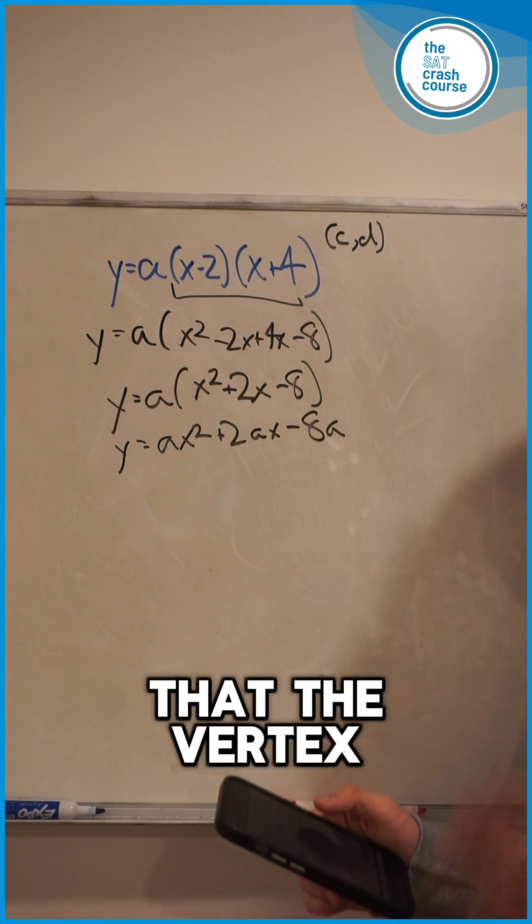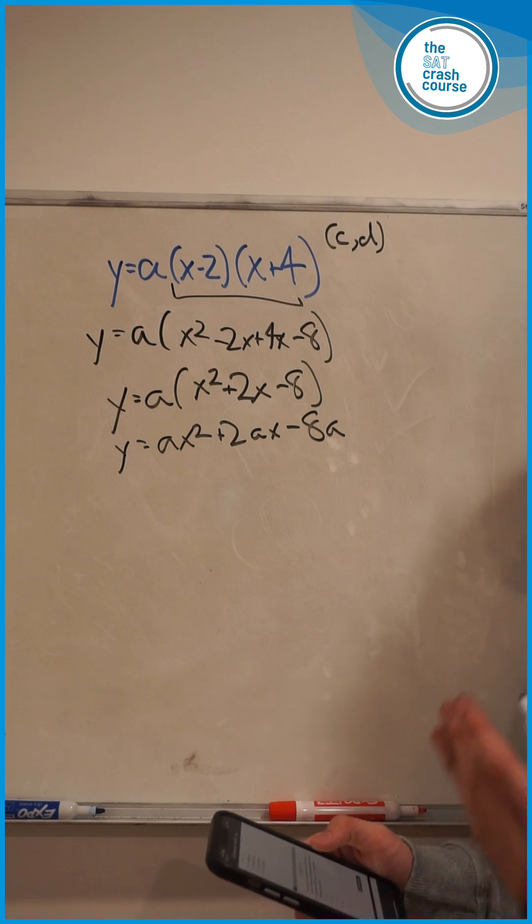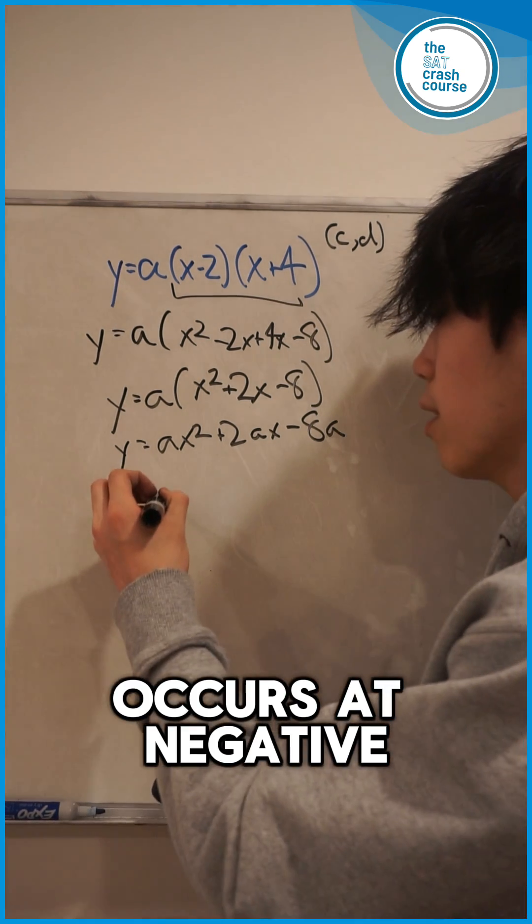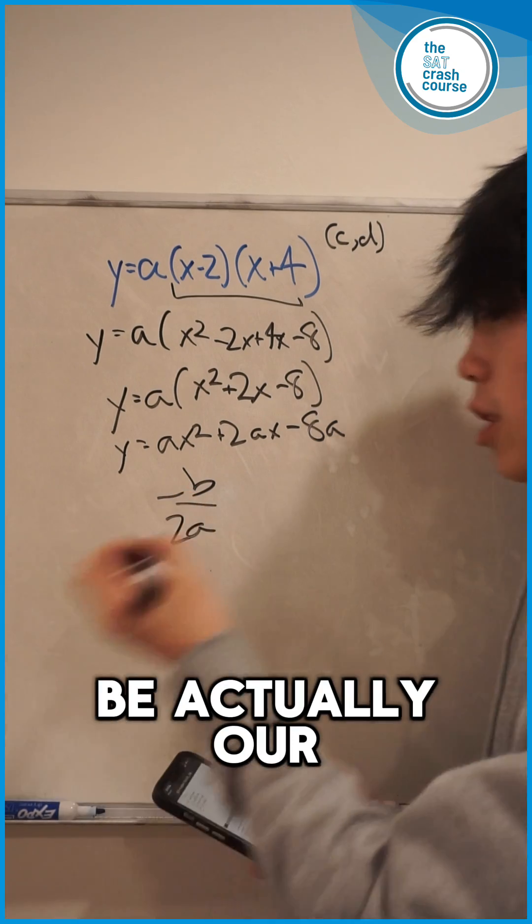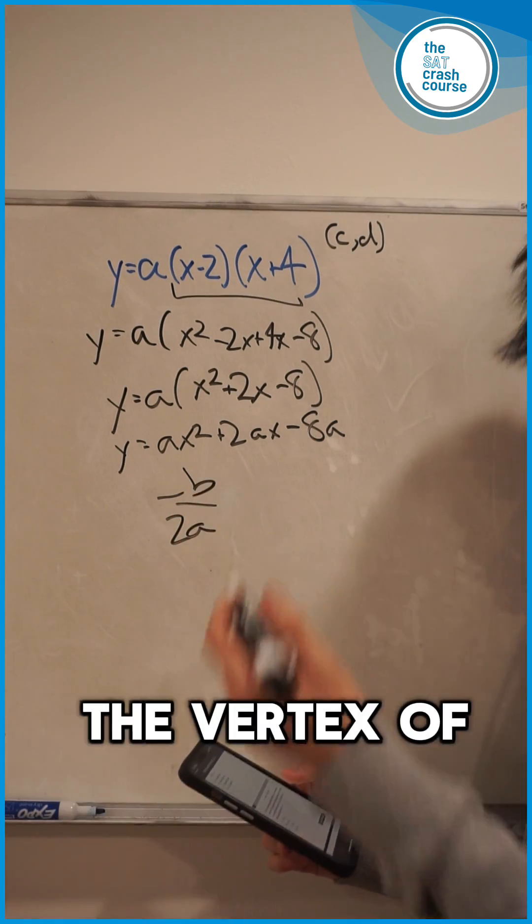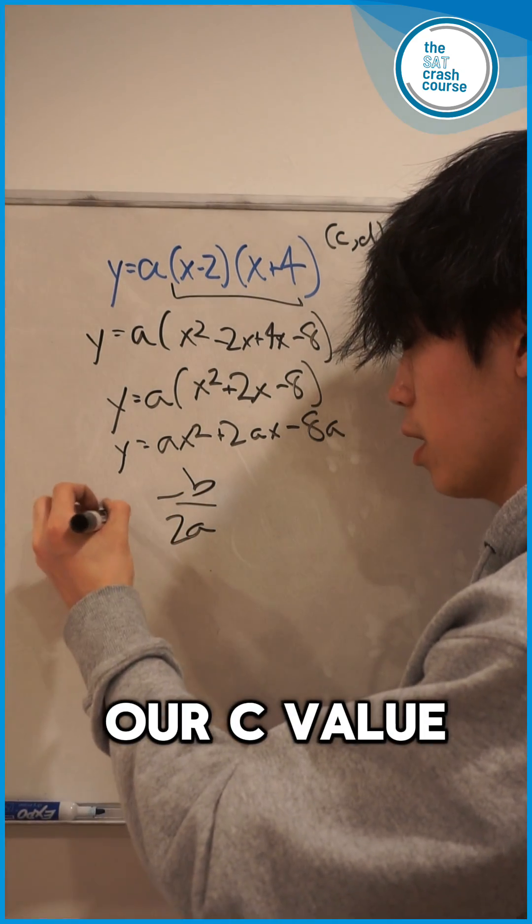Now we know that the vertex of the parabola occurs at negative b over 2a. So this will be our x value for the vertex of the parabola, or our c value.